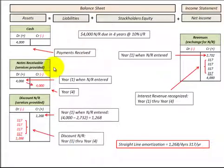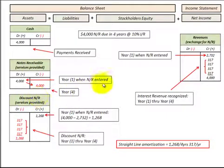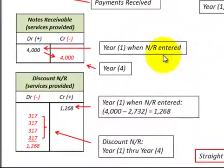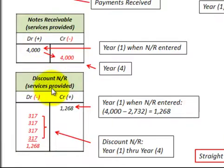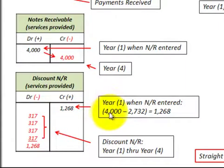Let's look at how we'd record a discount on notes receivable. Notes receivable is an asset on the balance sheet, and its associated discount account would be a contra-asset account. The revenues account that the notes receivable generated would be part of net income on the income statement. When we entered the note receivable at the beginning of year one, we would credit notes receivable for $4,000.